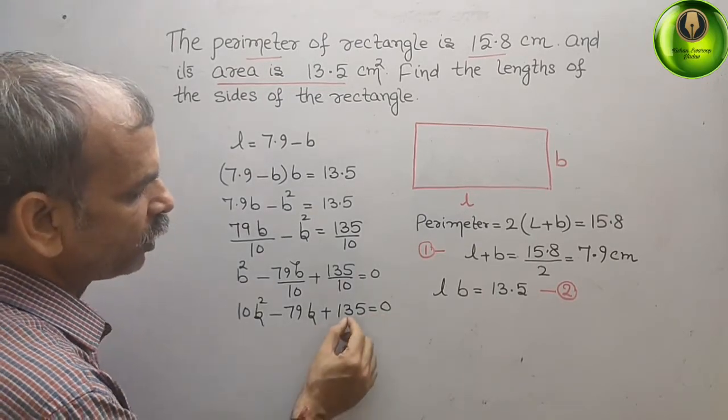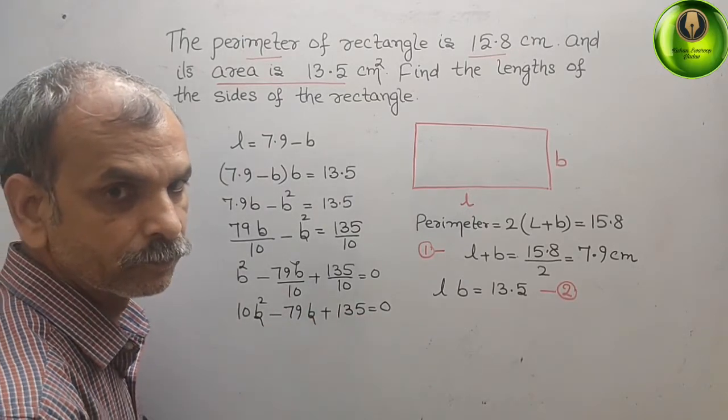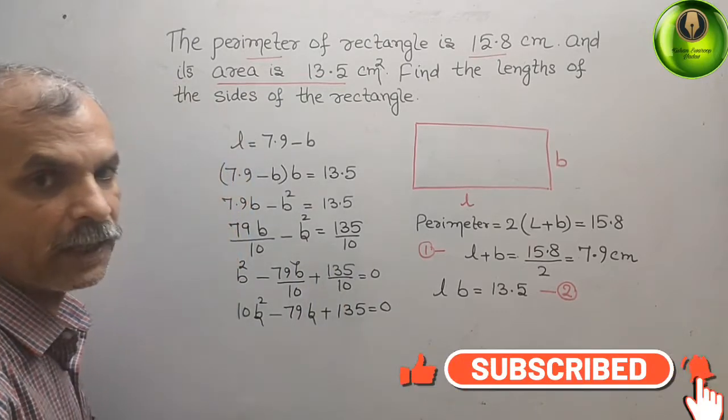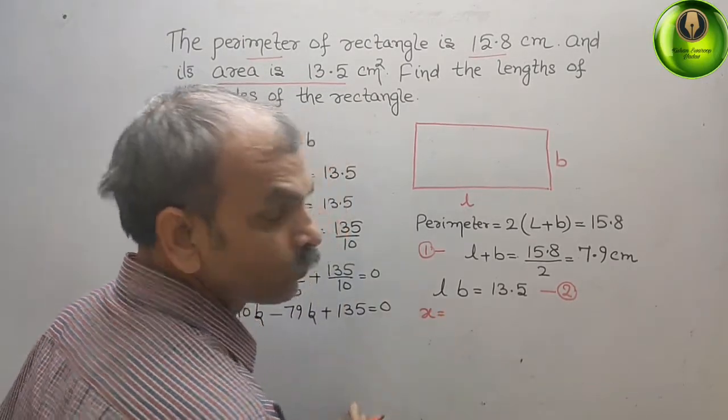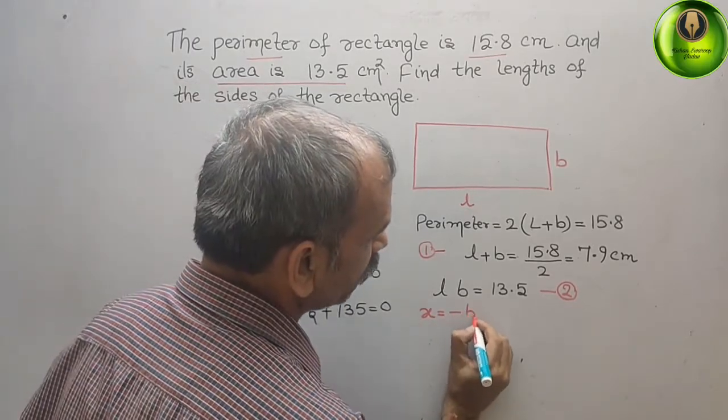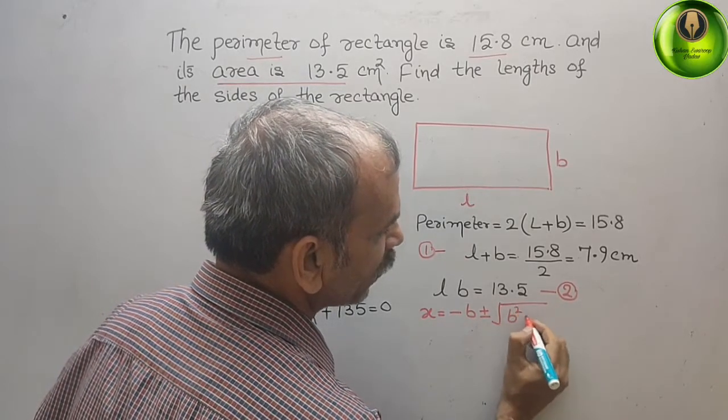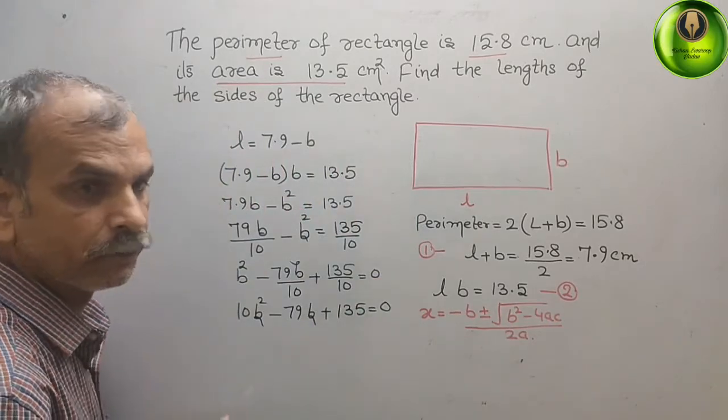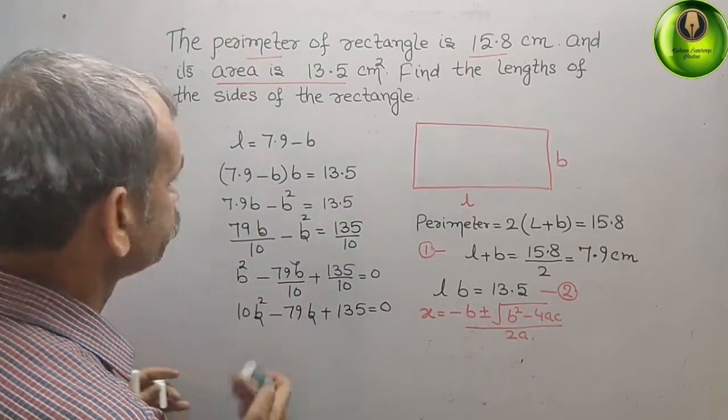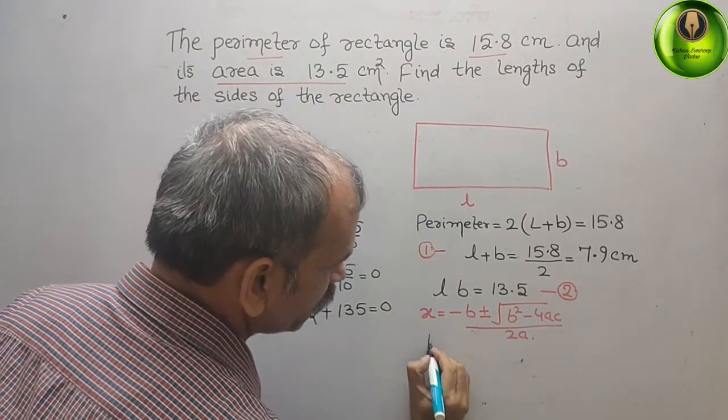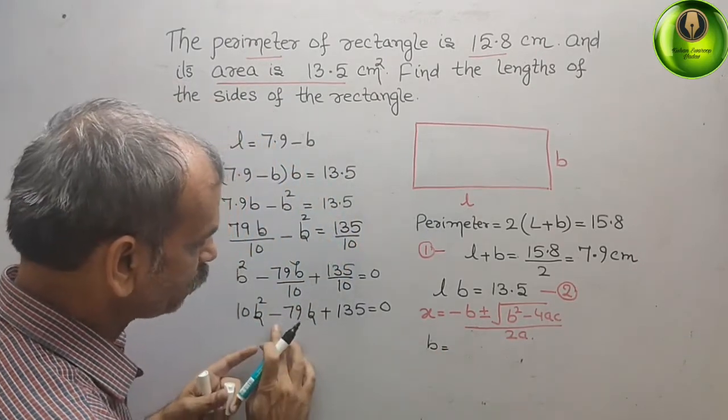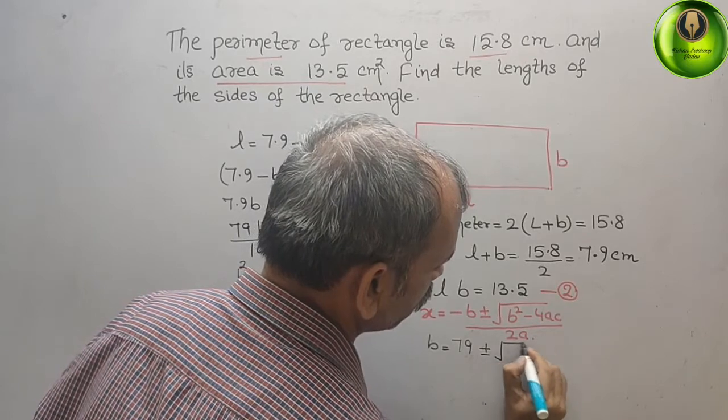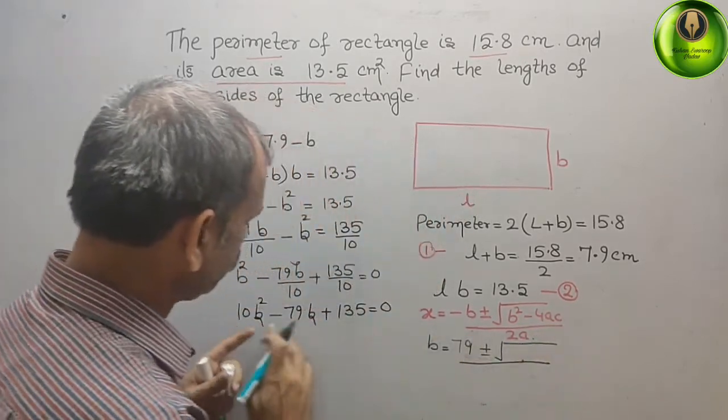Now, first we will go for middle term splitting. Or, you can directly go for a quadratic formula. So, our quadratic formula is what? X is equal to what? Minus B plus minus root under B square minus 4AC by 2A. Now, substitute the value here. What we will get? B is equal to what? Minus B. That means, minus of minus 79 is 79. Plus, minus root under by 2A. That means, 2 into 10 is 20.